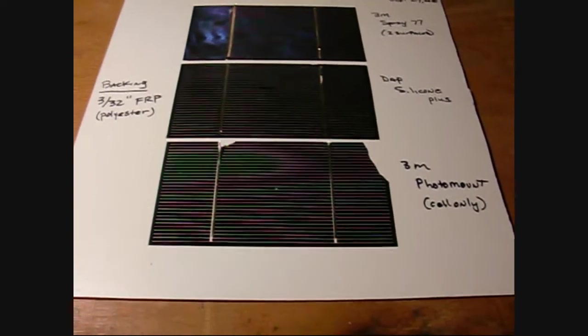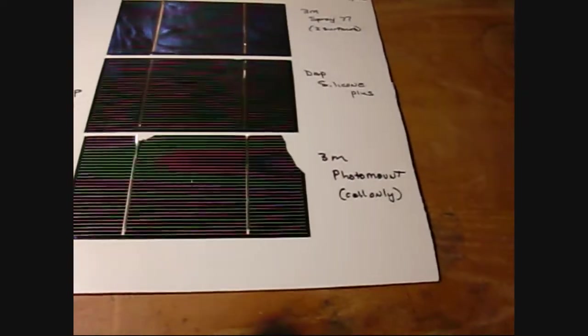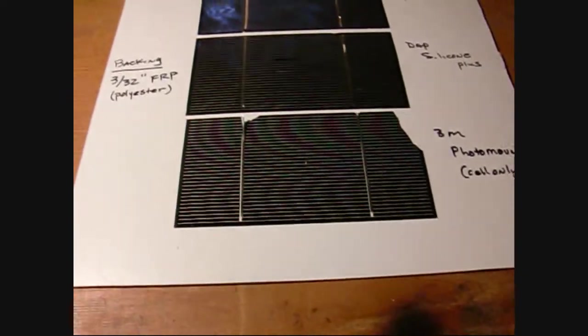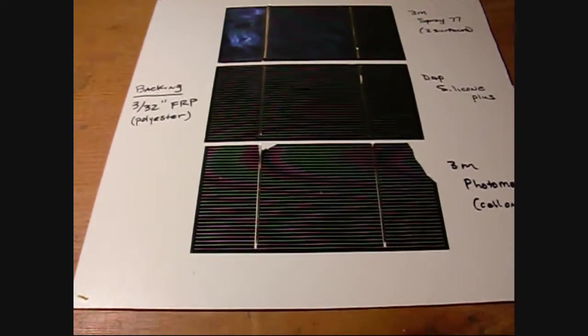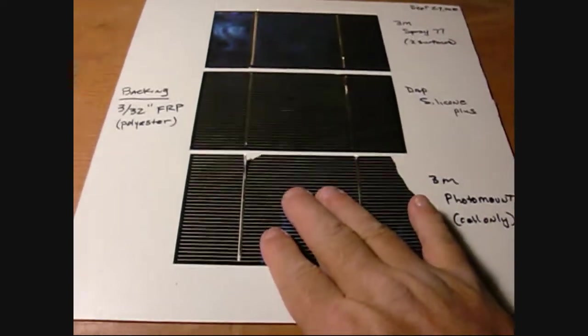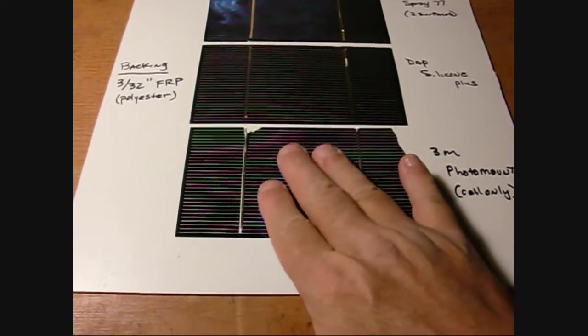The last stuff I tried was similar to the 3M stuff, but it's called photo mount. You basically only put it on one side. So I sprayed a little bit onto the cell and then pressed that down onto the FRP.